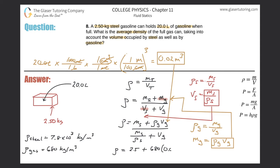Now the units are consistent, so I can plug everything in. The numerator: 2.5 plus 680 times 0.02. The denominator: 2.5 divided by 7.8 times 10 to the third, plus 0.02. Entering this into the calculator — 2.5 plus 680 times 0.02 divided by parenthesis 2.5 divided by 7800 plus 0.02 — gives approximately 792 kilograms per cubic meter.